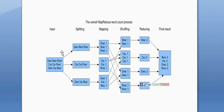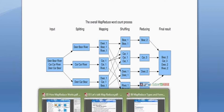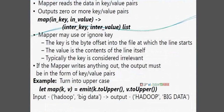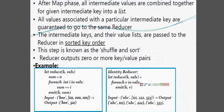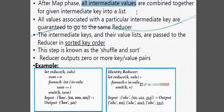For example, if you submit a Hive query or Pig query in the front end, but behind the screen this is what is going on — it is reading the data and applying mapping logic automatically. After mapping is completed, coming to the reducer: after map is completed, all intermediate values are combined together for the given intermediate key into a list.